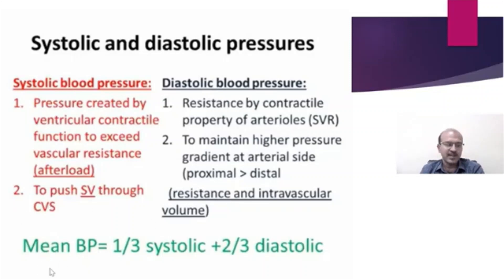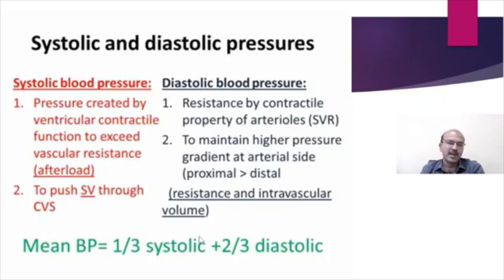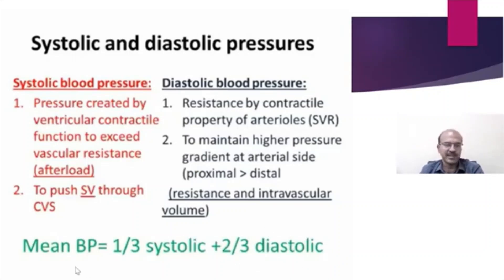The mean blood pressure is one of the commonly used measures to check the blood pressure range for treatment. It is one third of the systolic plus two thirds of the diastolic pressure. Anything that impacts the systolic pressure affects the mean BP, but anything that impacts the diastolic blood pressure has a bigger impact on the mean blood pressure.